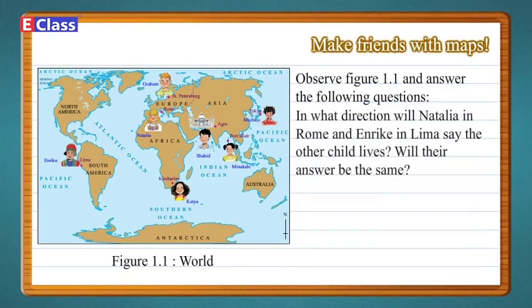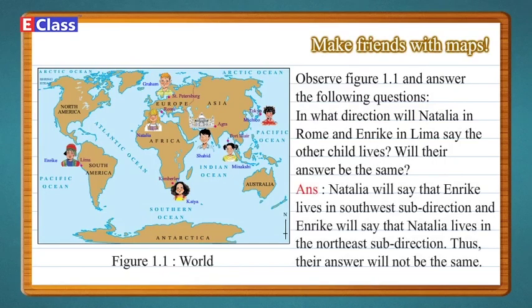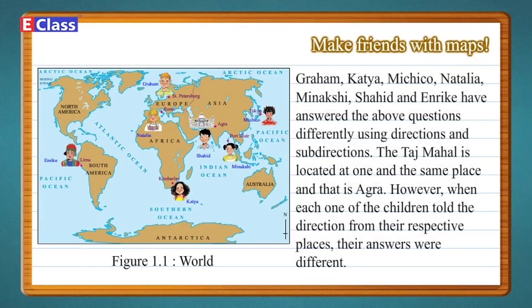In what direction will Natalia in Rome and Enrique in Lima say the other child lives? Will their answers be the same? Answer: Natalia will say that Enrique lives in the south-west sub-direction, and Enrique will say that Natalia lives in the north-east sub-direction. Thus, their answers will not be the same.